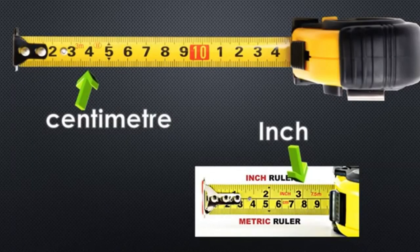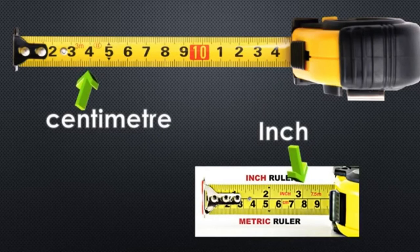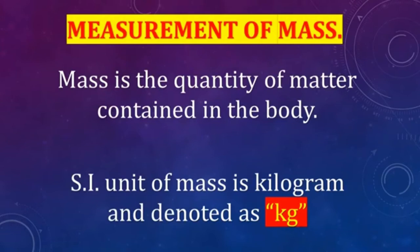Here we can see a measuring tape generally used by carpenters and engineers. This measuring tape provides two measurement units — centimeter and inch — so we can measure in either unit as needed. Next, we discuss measurement of mass. Mass is the quantity of matter contained in a body. The SI unit of mass is kilogram, denoted as kg.